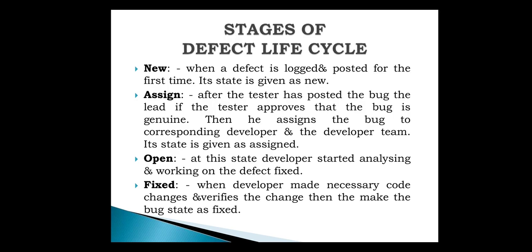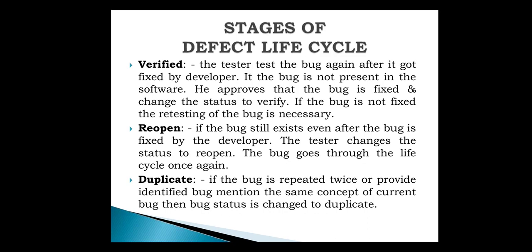The 'open' state is when the developer starts analyzing and working on the defect fix. 'Fixed' is when a developer makes the necessary code changes and verifies the change, then the bug status is changed to fixed. 'Verified' is when the tester tests the bug again after it is fixed by the developer. If the bug is not present, the tester approves and changes the status to verified. If the bug is not fixed, retesting is necessary.